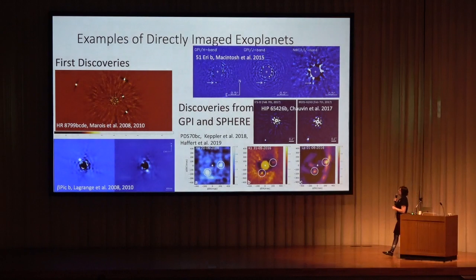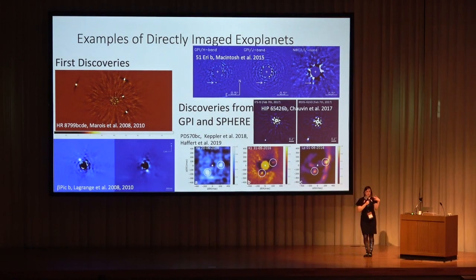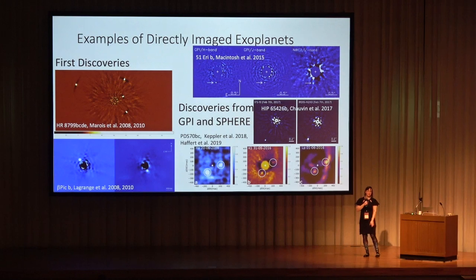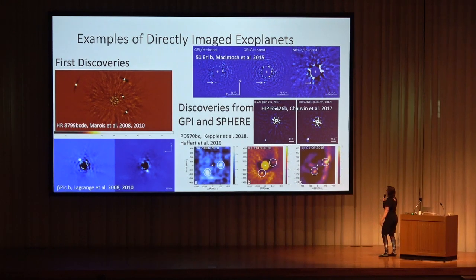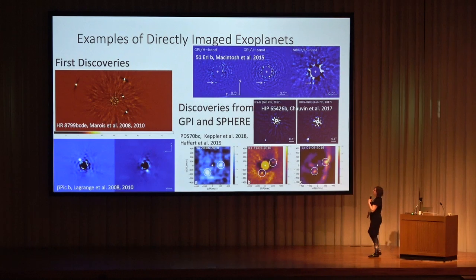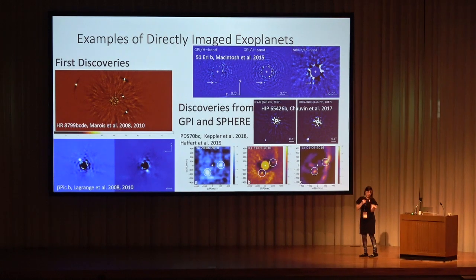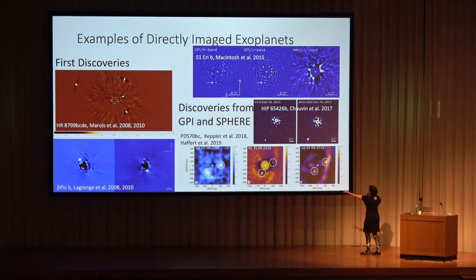There's been tremendous growth: where once I could show all imaged planets on one slide, now they don't fit on the screen. The famous ones — HR 8799, Beta Pic b, 51 Eri b — were discovered with facility AO systems. We then had an acceleration of discoveries with the Gemini Planet Imager at Gemini and SPHERE at the VLT, including everyone's favorite, PDS 70b and c.